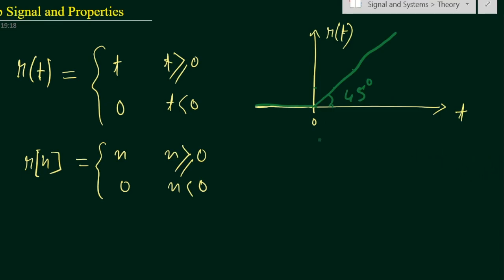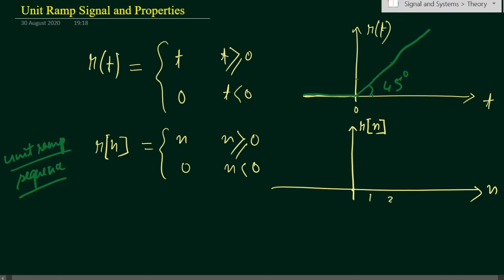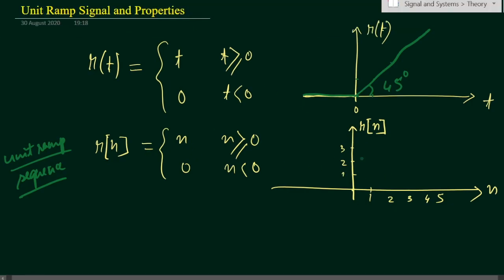Similarly we can draw the discrete time sequence — the unit ramp sequence. This is a discrete time signal. Here the x-axis is n and y-axis is r(n). When n equals 0 we have value 0; when n equals 1 we have 1; when n equals 2 we have 2; when n equals 3 we have 3, and so on up to infinity. This is the unit ramp sequence.